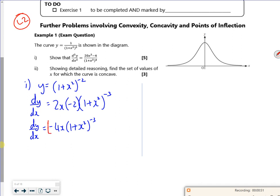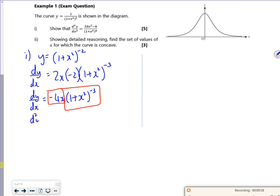Now I want to differentiate it again to get d²y by dx². So I'll differentiate it again. I'm going to use the product rule. So that's the first bit multiplied by the second bit differentiated. So I'm going to use a chain rule.